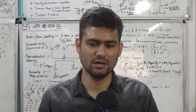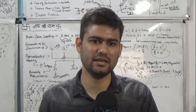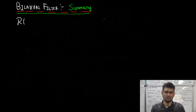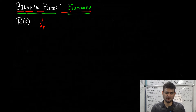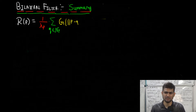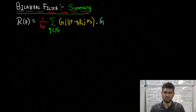To summarize everything learned so far, the bilateral filter applied to a pixel p in an image gives the resultant pixel value rp, which is 1 over lambda_p (the normalization factor, dependent on pixel location) times a sum over all q belonging to the neighborhood of pixel p, of g of norm of p minus q parameterized by sigma_s — sigma_s being a parameterization of the spatial domain — times g of norm of ip minus iq parameterized by sigma_c.